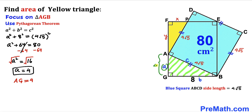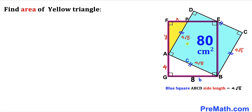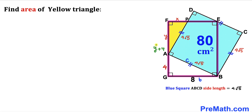Now let's focus on the rectangle EFGB. We know that side length FG is going to be the sum of Y and 4, so that is Y + 4. And since this is a rectangle, the opposite side EB is also Y + 4.